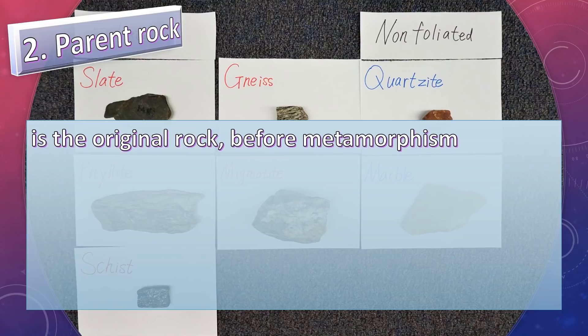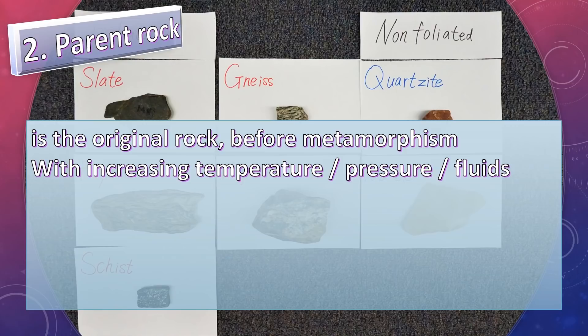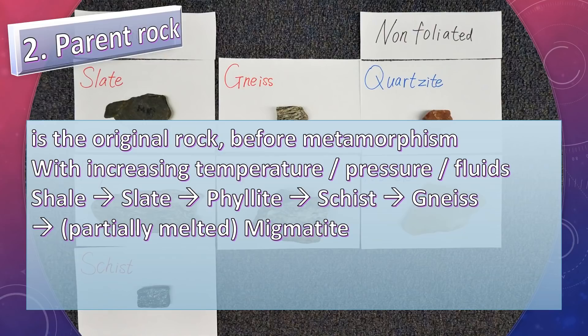Parent rock is the original rock before metamorphism. With increasing temperature, pressure, or adding fluids, shale becomes slate, then phyllite, then schist, then gneiss, with partial melting forming migmatite.